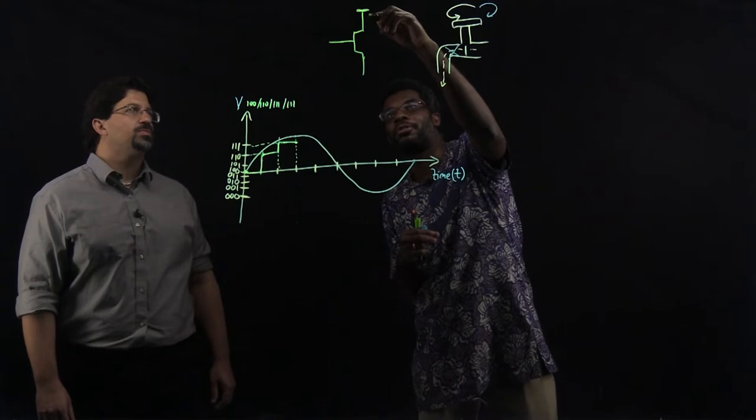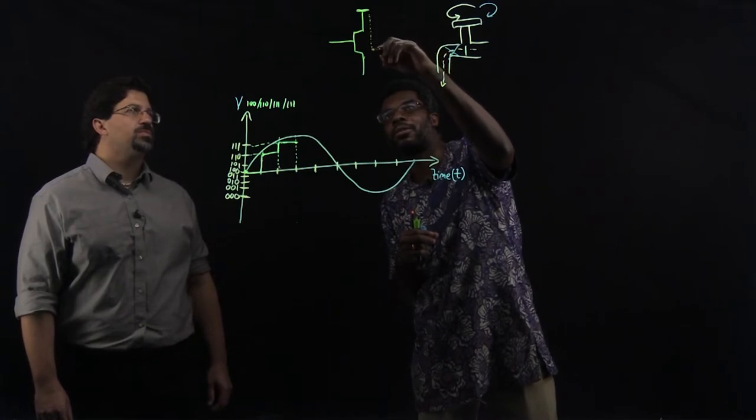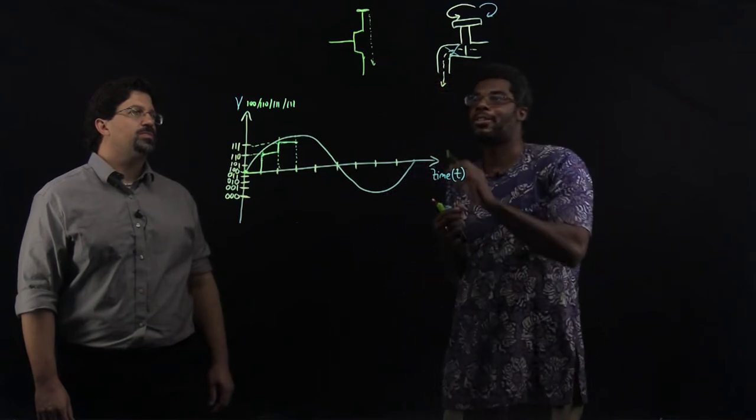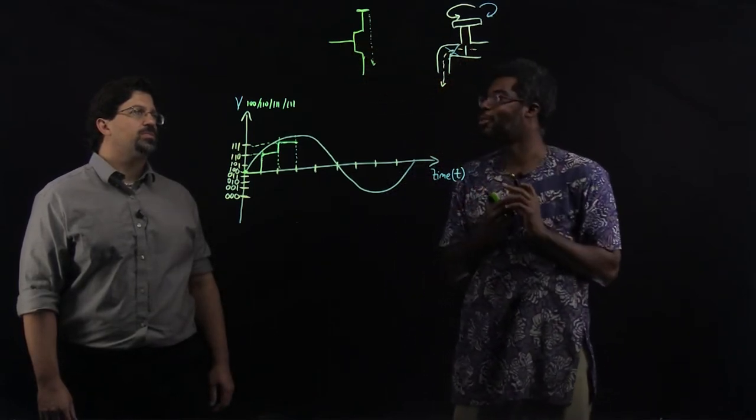We have electricity flowing this way, wants to flow this way. And there is this thing called the gate. The gate is similar to the handle for a tap.